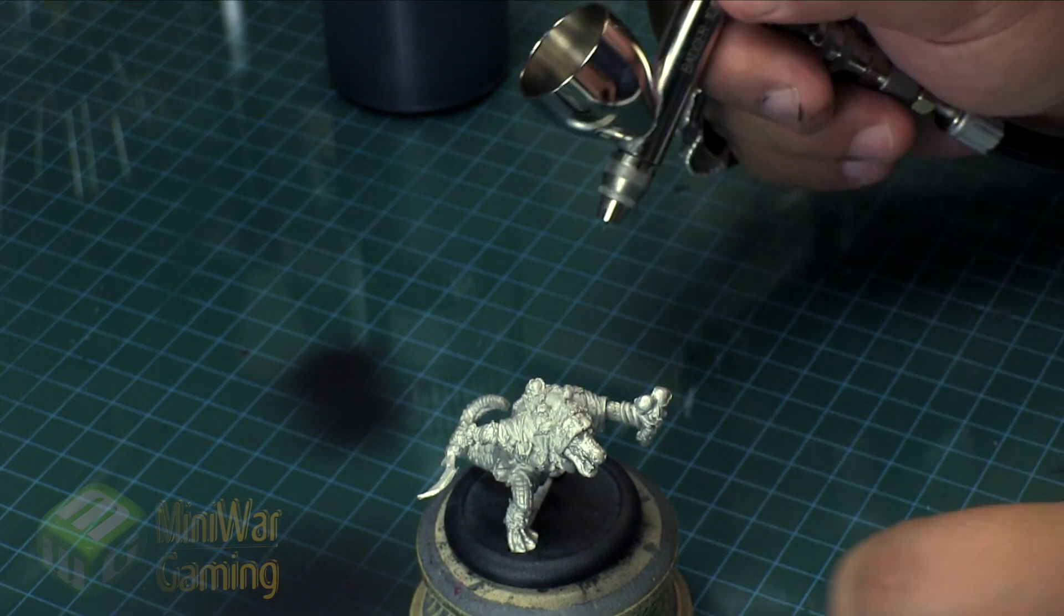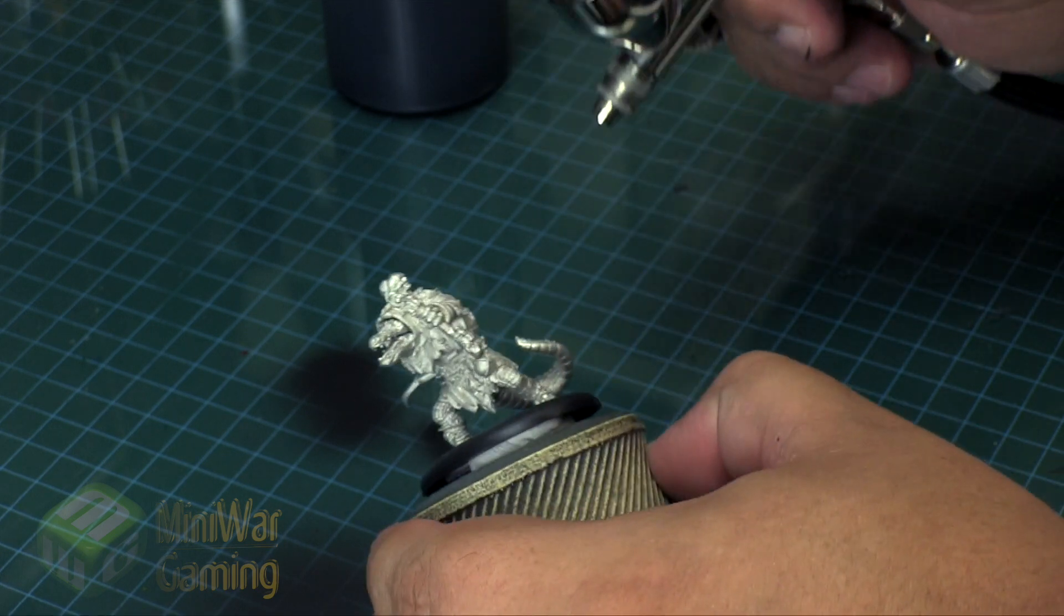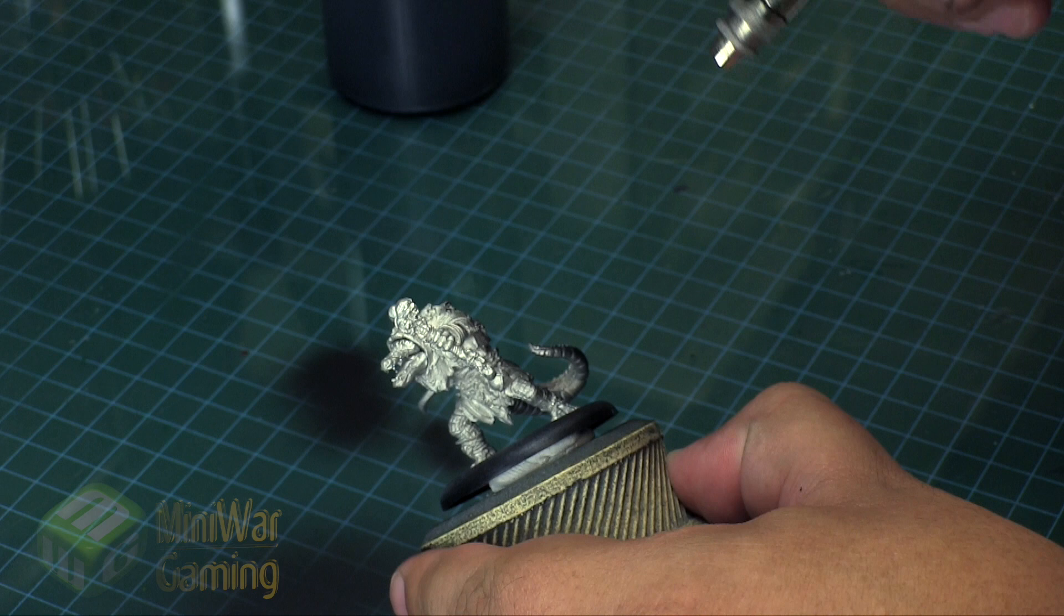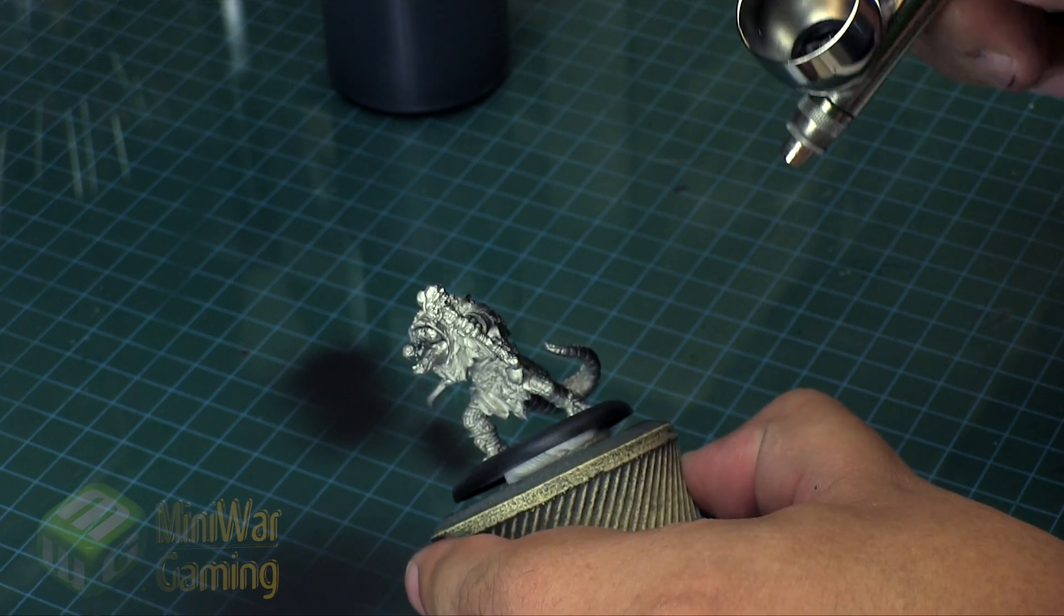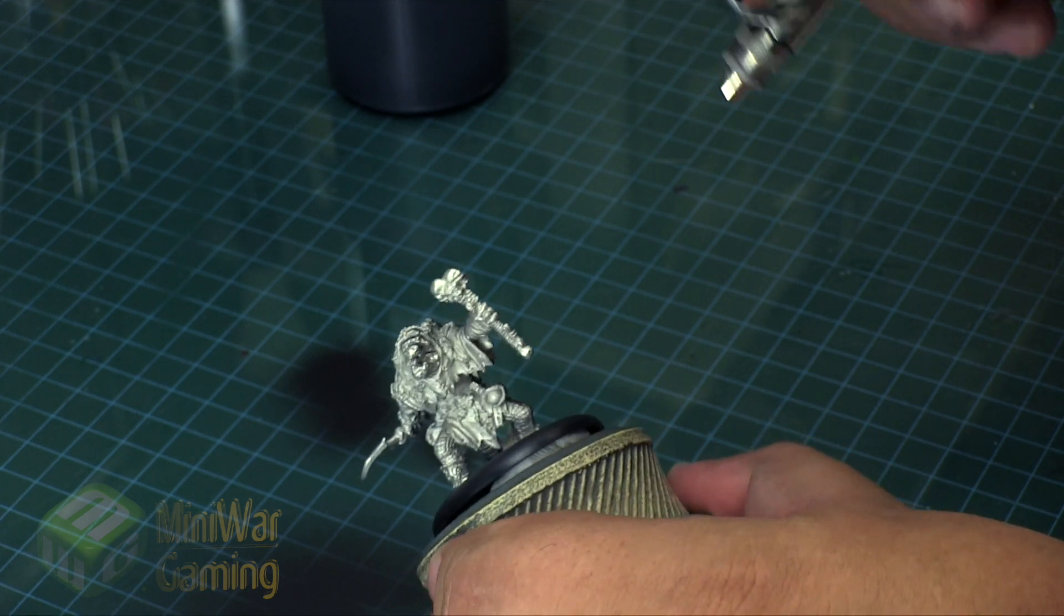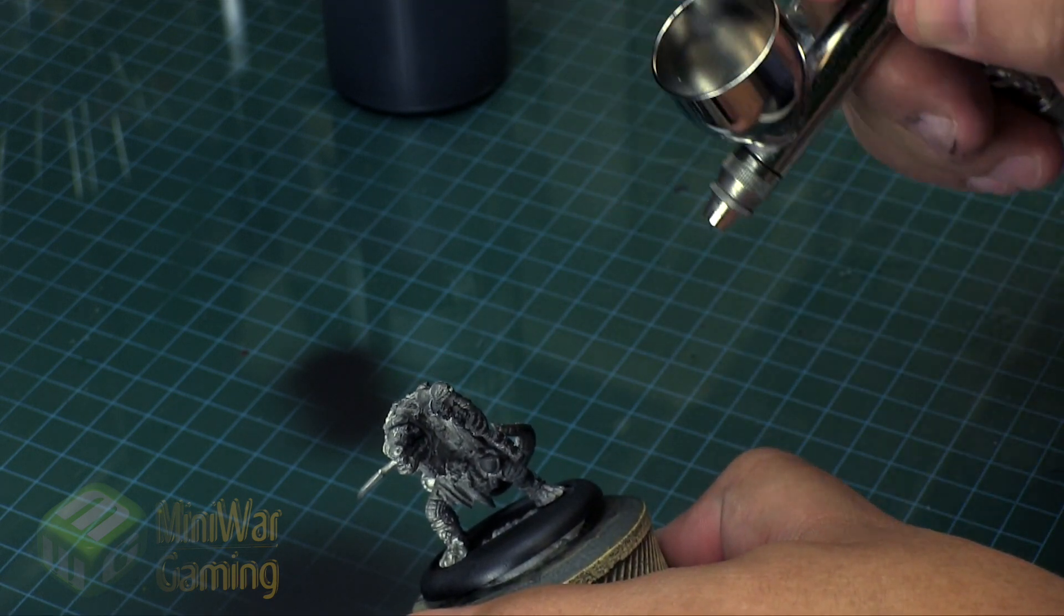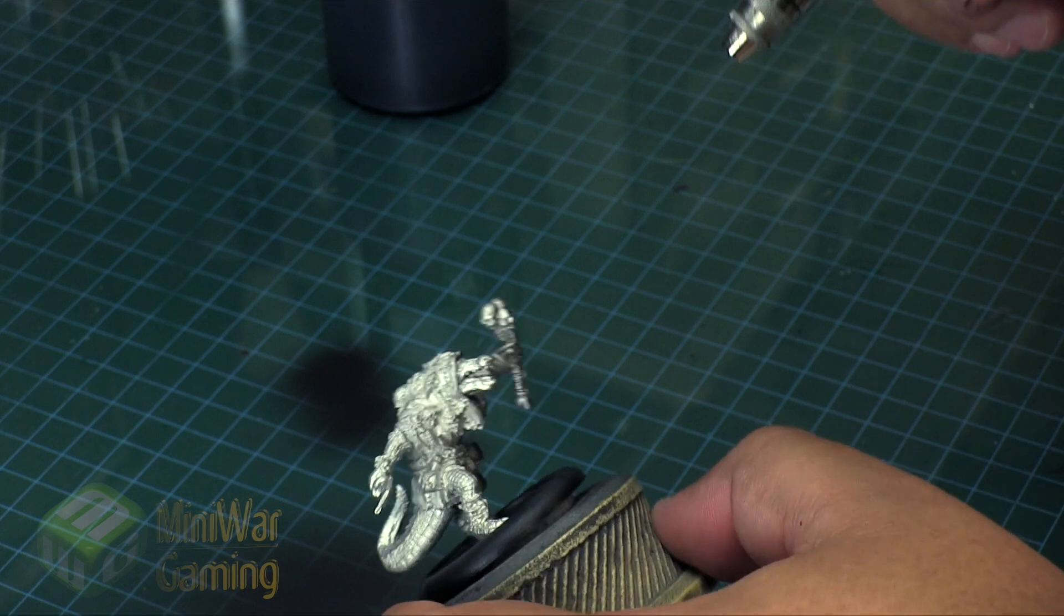Still got plenty of primer in here from doing the terminator. You ease the trigger. Just like when you're airbrushing with other paints as well, I often start the airflow away from the model and then bring it to the model, even when I'm priming as well.